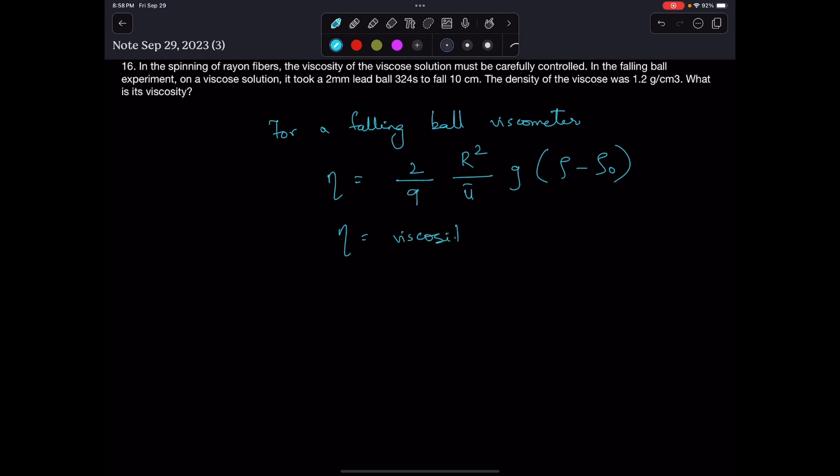r is the radius of the ball, u bar is the terminal velocity.